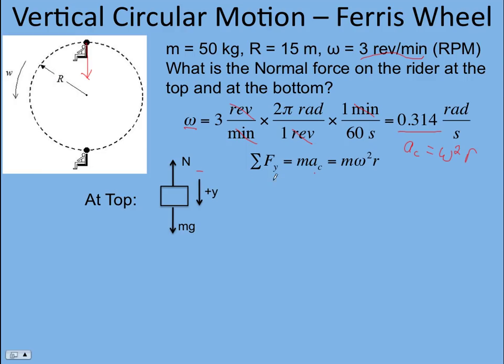And we add up all the forces in the y direction. The weight is in the positive y direction. It's in the same direction as positive y. That's why it's so important to put your coordinate system on your free body diagram. And the normal force is in the negative direction, so it has a minus sign. And so mg minus N is the sum of the forces in the y direction.